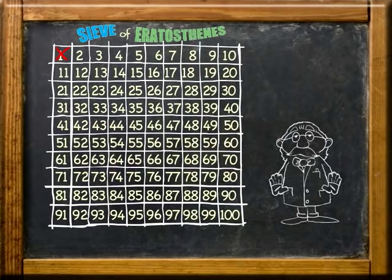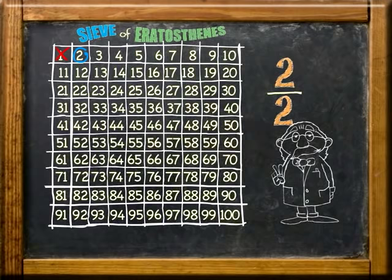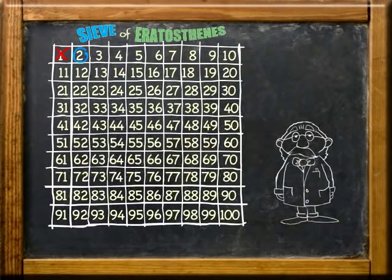Now let's put a circle around the number 2. It is a prime number because it is greater than 1 and is only divisible by itself and 1. 2 is also the only even prime number. Next, we'll cross out all multiples of 2. To find the multiples of 2, simply skip count by 2.